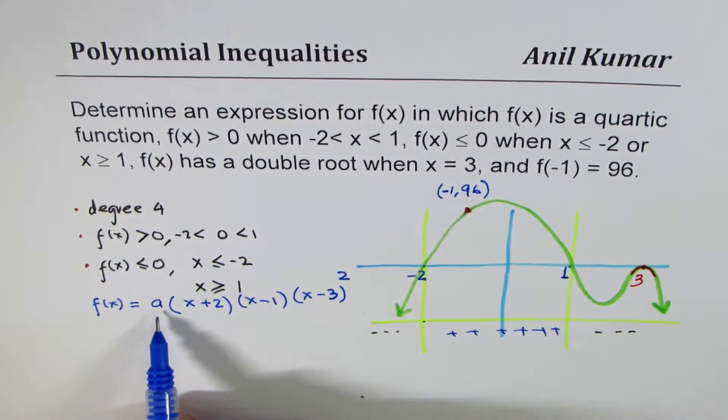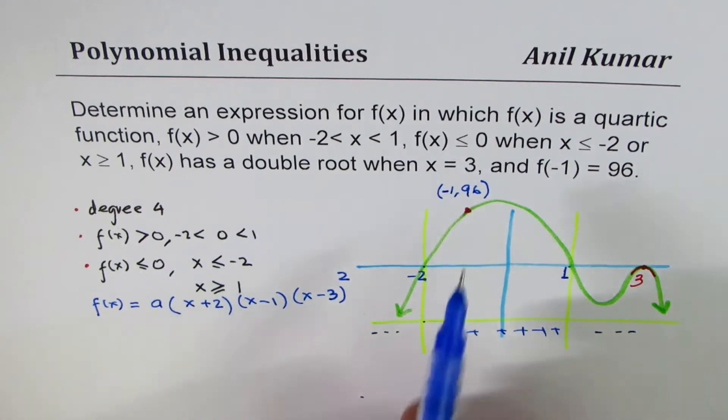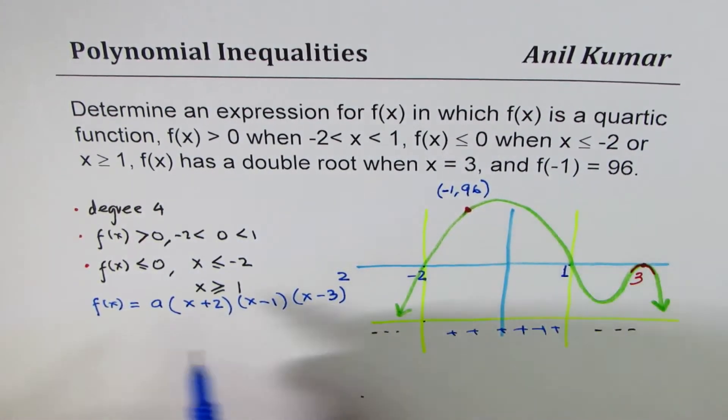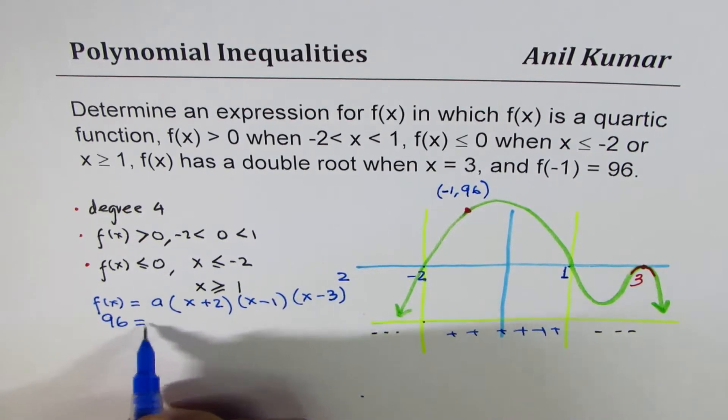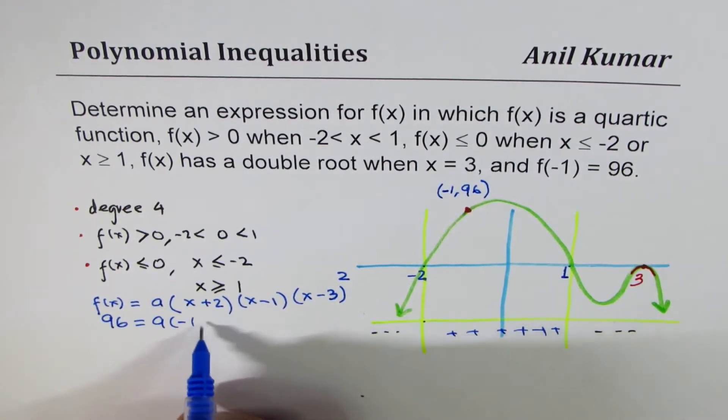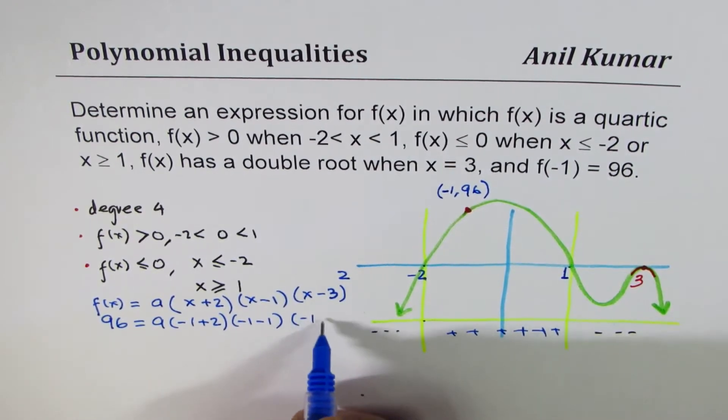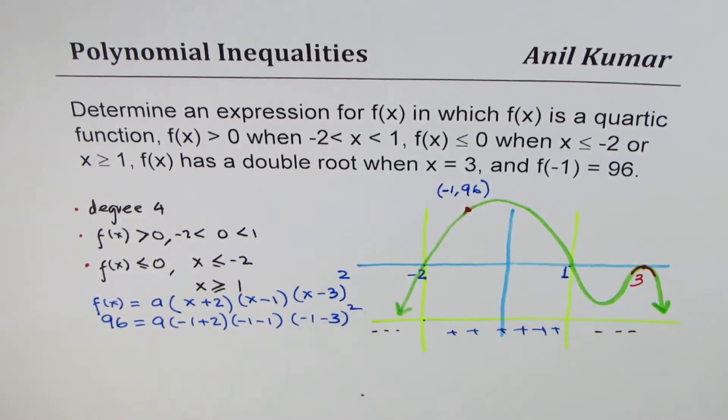Now, how do you find a? To find a, we can utilize the given point minus 1 for x and f(x) is 96. So, we write this as 96 equals to a times (-1 + 2)(-1 - 1)(-1 - 3) whole square, correct?